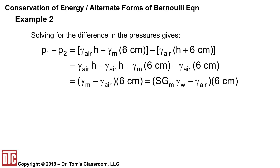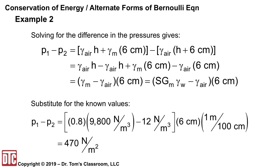After rearranging, the gamma-air times h terms cancel, leaving: p1 minus p2 equals (gamma-manometer minus gamma-air) times six centimeters. This equals SG-manometer times gamma-water minus gamma-air times six centimeters. Plugging in: 0.8 times 9,800 N/m³ minus 12 N/m³, times six centimeters converted to meters (divide by 100), giving a pressure difference of 470 N/m².